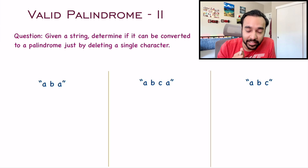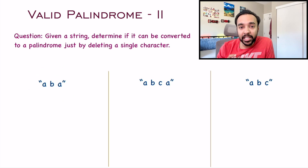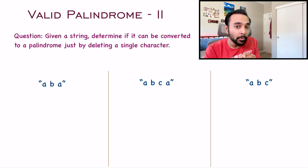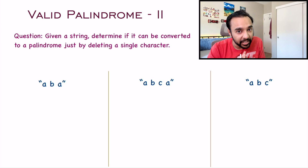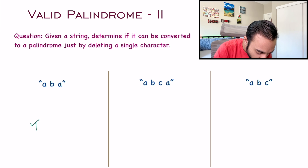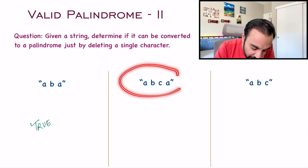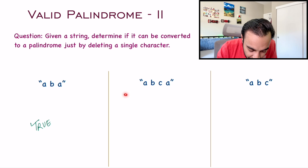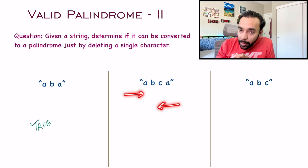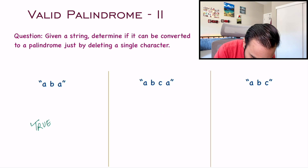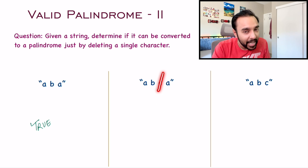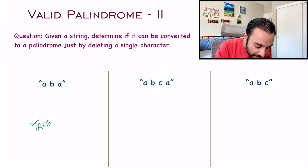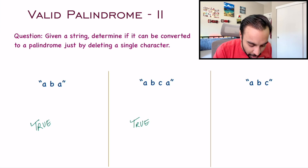Let us look at some of the sample test cases. In our first test case, the string is "aba". Can you make it into a palindrome just by deleting one character? You notice that this is already a palindrome, so you can return true. In the next string, you see "abca". Currently this is not a palindrome, because it reads different from the front and from the back. Can you make it a palindrome? You see that if you just delete the single character C, then this string becomes a palindrome. So in this scenario, once again, you are going to return true.